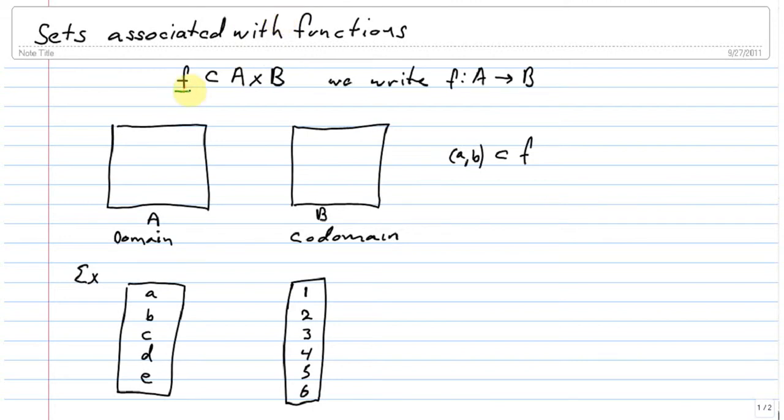So a function f can be thought of as a subset of the product of two sets, A and B. Now that's not the way we are used to thinking of it, we're used to writing, and this still applies, a function from A to B, where A is the domain and B is the codomain.